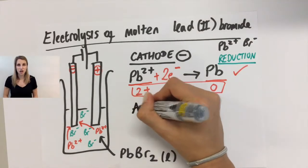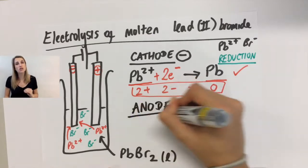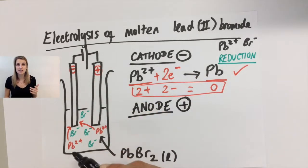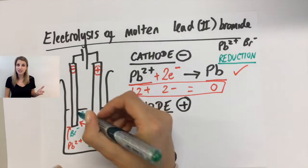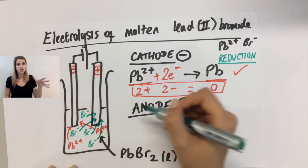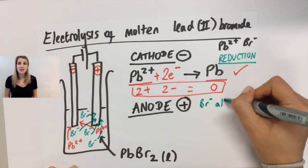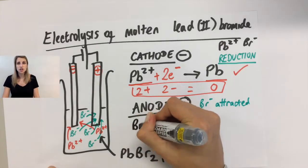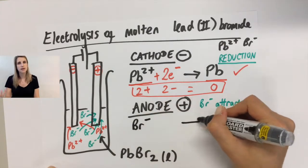Now what happens at the anode? So the anode is my positive electrode. So the thing that gets attracted to my anode is the negative ions, which in this case are the bromide ions. So the bromide ions get attracted to the anode. Now they also become their elemental form at the anode. So Br- turns to Br.